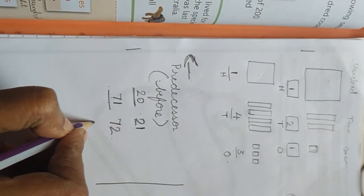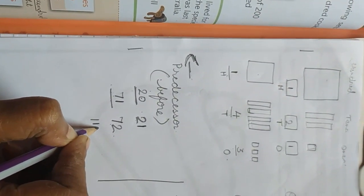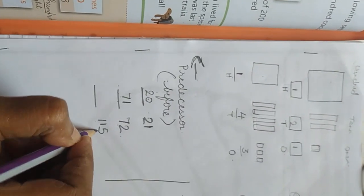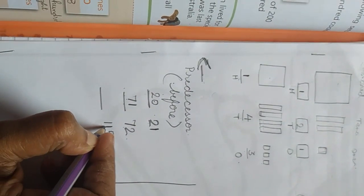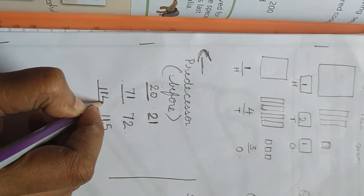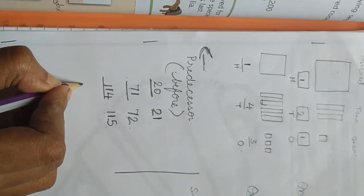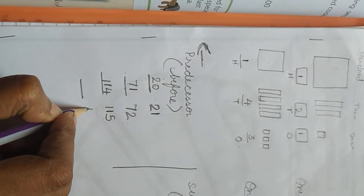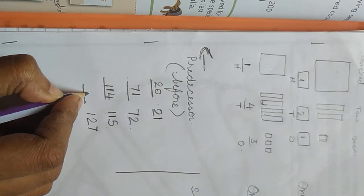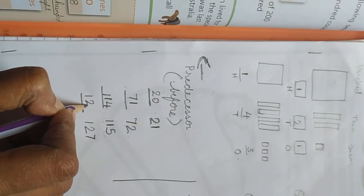Now a three-digit number — 105, that is 100 and 5. Before 105, which number children? Before 105, which number? 104. Understood? Now one more sum — before 127, which number will come? 126.